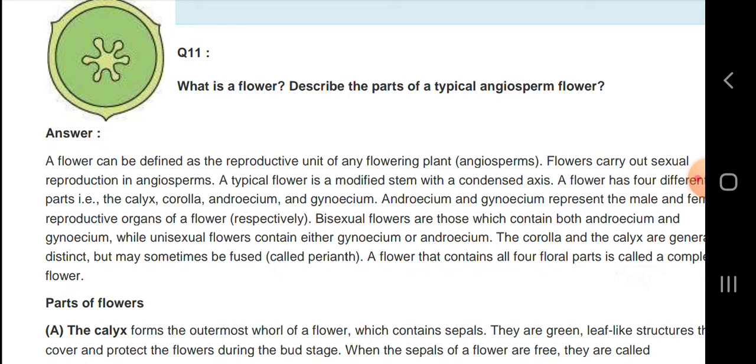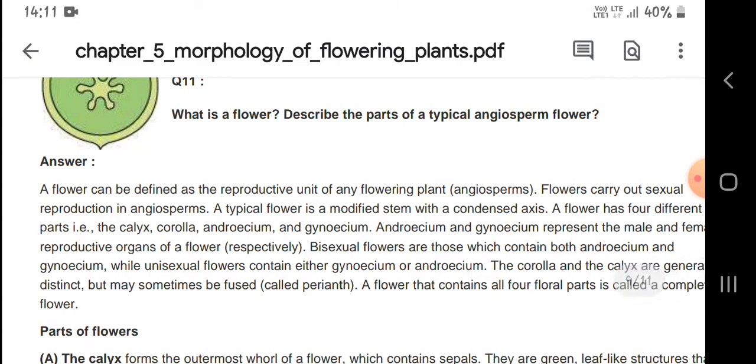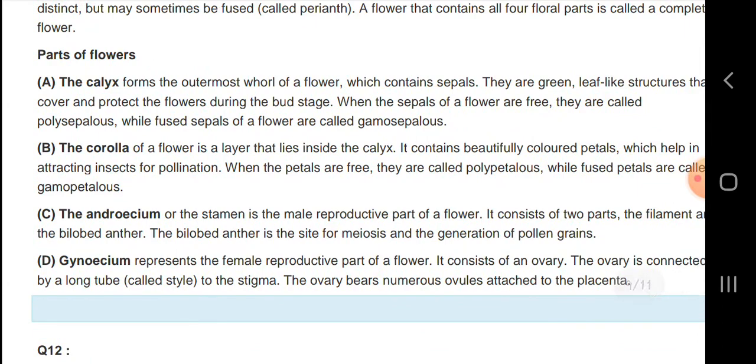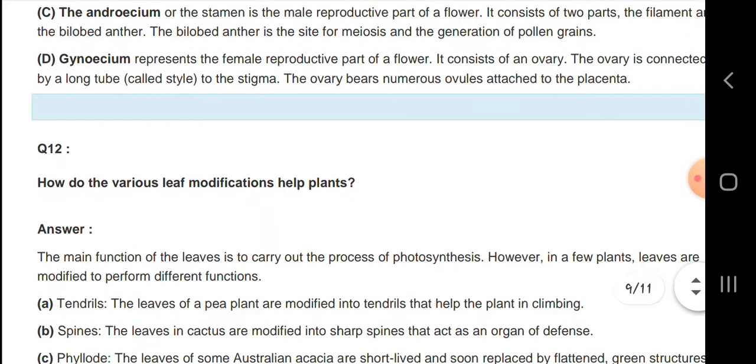A flower can be defined as the reproductive unit of the flowering plant. Parts of flowers include the calyx, which forms the outermost whorl of a flower and protects the bud. The corolla is a layer that lies inside the calyx. The androecium or stamen is the male reproductive part of the flower. The gynoecium is the female reproductive part of the flower.